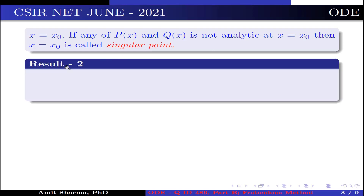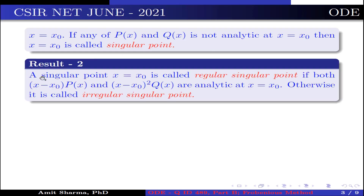Result 2: A singular point x = x₀ is called a regular singular point if both (x − x₀)·p(x) and (x − x₀)²·q(x) are analytic at x = x₀; otherwise, it is called an irregular singular point.